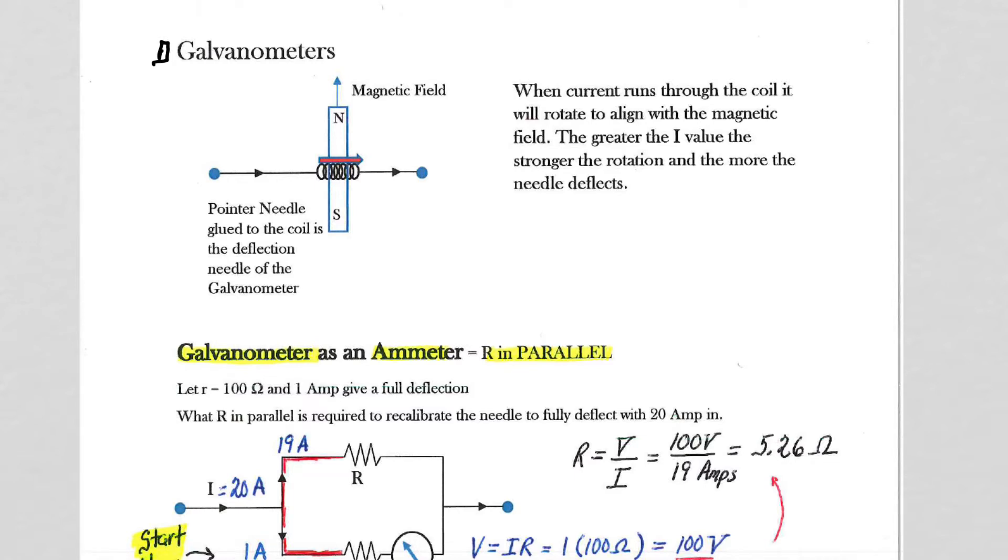A galvanometer is essentially a box, like a little metal box. It would have a round dial on it with a pointer needle that would point to a zero, and then it would have a full scale deflection somewhere over here when the needle pinned to the other side.